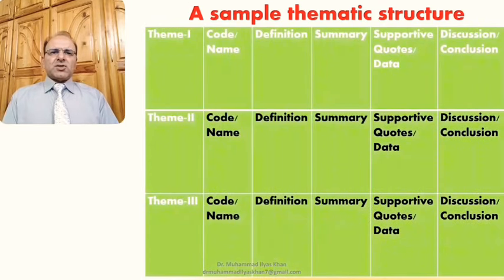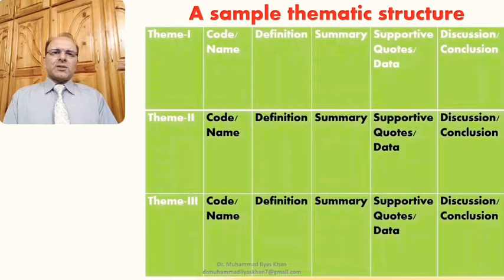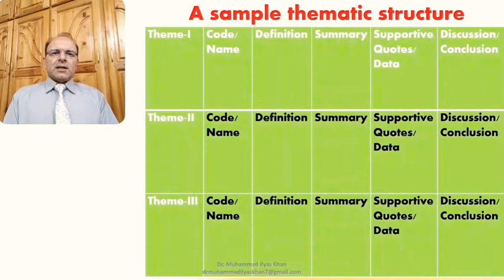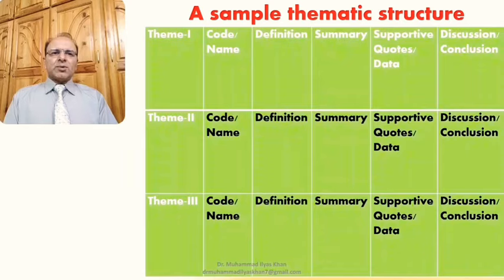Here is a sample general thematic structure. For instance, there could be two, three, or more themes. For a study with three themes: theme one would include the code name for that theme, its definition, a summary based on the analyzed data, supportive quotes or relevant data chunks from the data, and then discussion and conclusion of that particular theme.